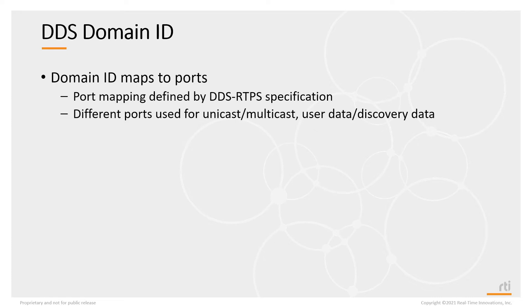DDS uses the domain ID to create ports. Ports are a value that's part of your address — when you're sending data to a UDP address, you also need to specify a port. It's like an apartment building: the building has an address on the street, but you need to send it to a specific apartment number. So when you send data to a specific UDP address, you still need to add this value called the port, and what port DDS uses is actually controlled by the domain ID.